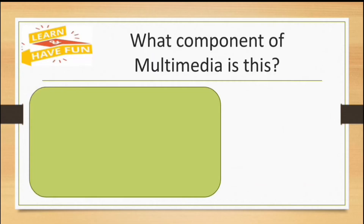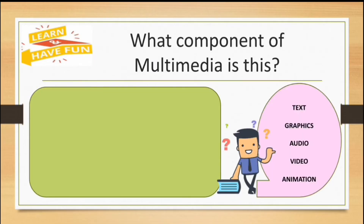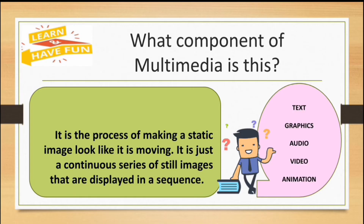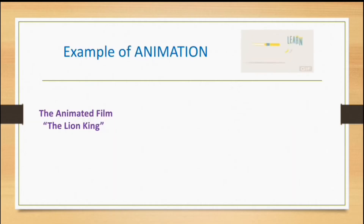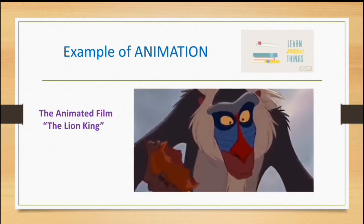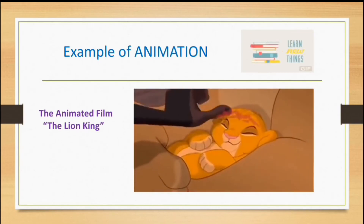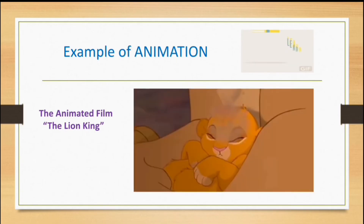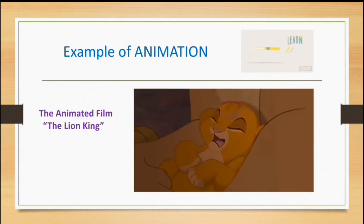Let's move on to the final component. Choose from the 5 components — text, graphics, audio, video, or animation. Number 5: It is the process of making a static image look like it is moving. It is just a continuous series of still images displayed in a sequence. The answer is animation. Here is an example of animation — from the famous film The Lion King.